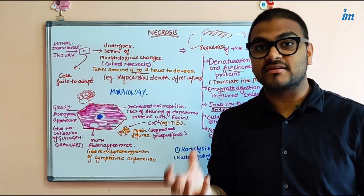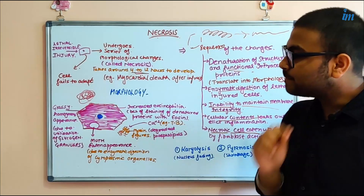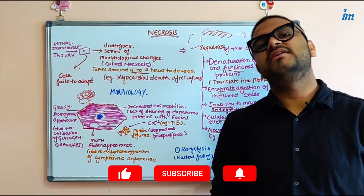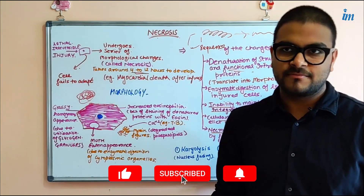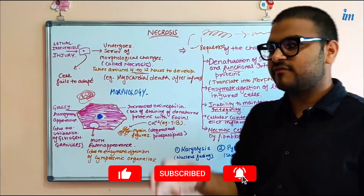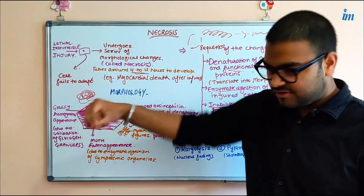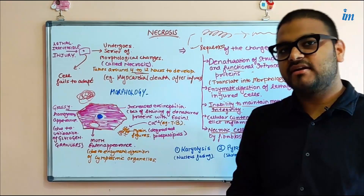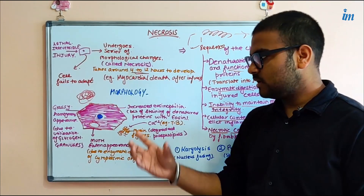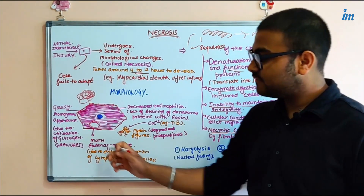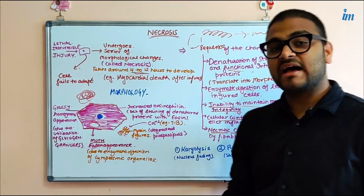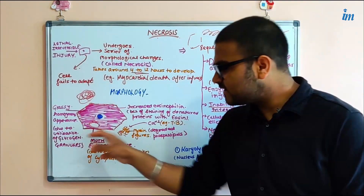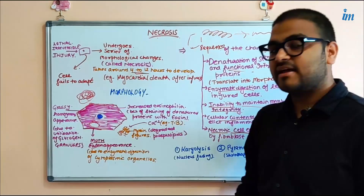An important example to remember: in tuberculosis, these myelin figures attract calcium ions from the extracellular fluid and blood, and the myelin figures become calcified. So in tuberculosis you can see areas of calcification in the necrosed area of the lungs. Also, because various organelles in the cytoplasm are denatured and disappear, they leave behind cavities in the cytoplasm. These cavities give the cytoplasm a moth-eaten appearance — like a moth has eaten the cytoplasm.